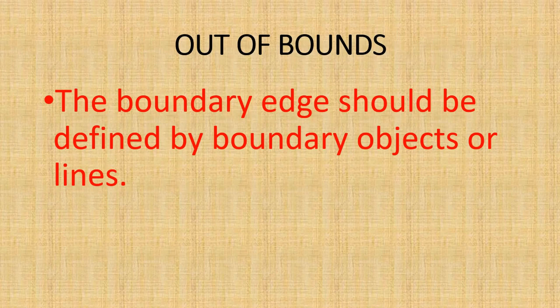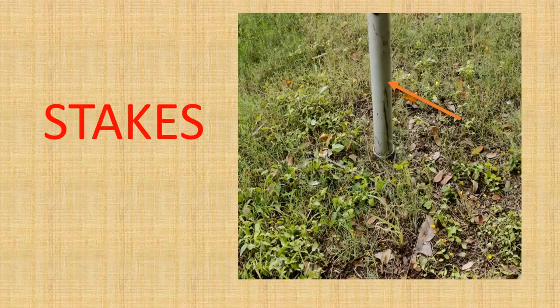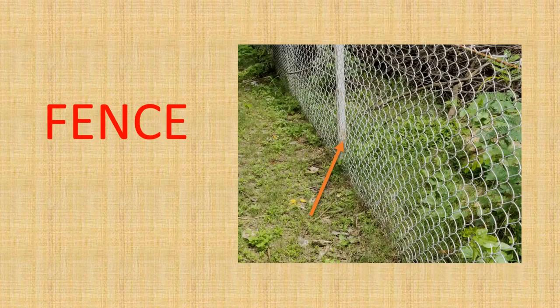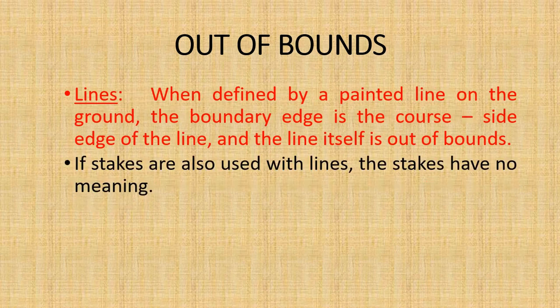The boundary edge should be defined by boundary objects or lines such as a wall, stakes, fence, or lines. When defined by stakes or a fence, the boundary edge is defined by the line between the course-side points of the stakes or fence posts at ground level, excluding angle supports. Those stakes and fence posts are out of bounds.